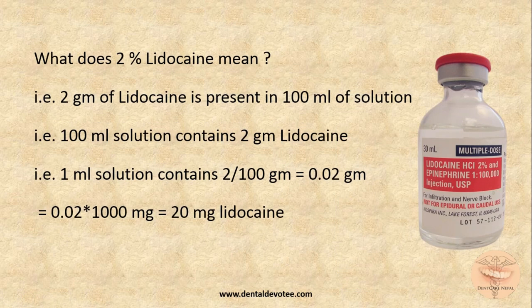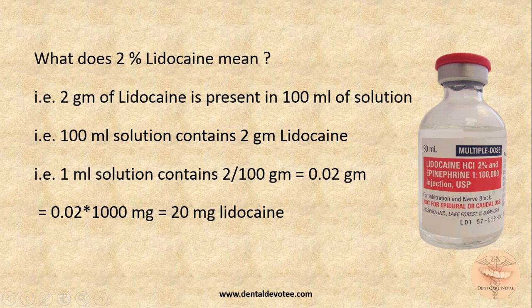What does 2% lidocaine mean? It means 2 grams of lidocaine is present in 100 ml of solution. Using the unitary method: 100 ml contains 2 grams, so 1 ml contains 2 grams divided by 100, which is 0.02 grams. Converting grams to milligrams, that becomes 20 mg. So 2% lidocaine means 20 mg per ml.